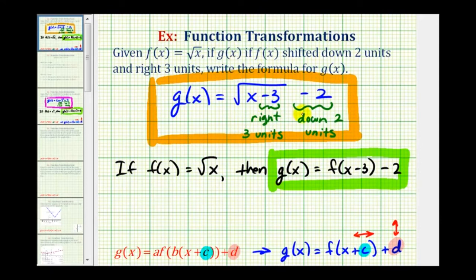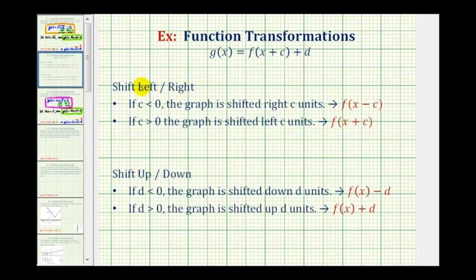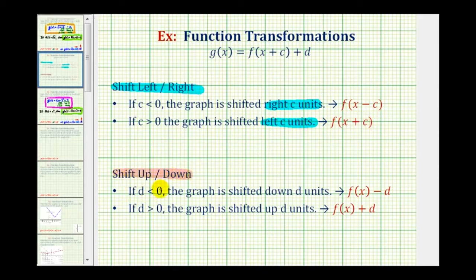So here's how we can express g of x in terms of f of x, if asked. And to finish, let's summarize these two types of translations. To shift a graph left or right: if c is negative or less than zero, the graph is shifted right c units, so we'd have f of the quantity x minus c. And if c is positive or greater than zero, the graph is shifted left c units, so we'd have f of the quantity x plus c. And for shifting up or down: if d is negative or less than zero, the graph is shifted down d units, so we'd have f of x minus d. And if d is positive, the graph is shifted up d units, so we'd have f of x plus d.